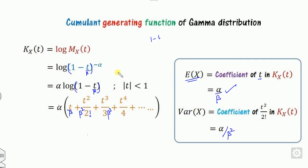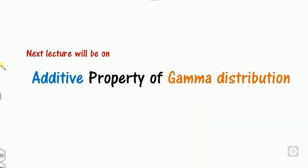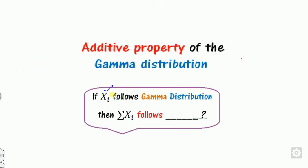In the next class, we will see the additive property of the gamma distribution. What is the meaning of additive property? If X_i follows the gamma distribution, what will happen to their sum? That is, if X and Y both follow the gamma distribution, can we say X plus Y also follows the gamma distribution? We will see that in the next lecture.